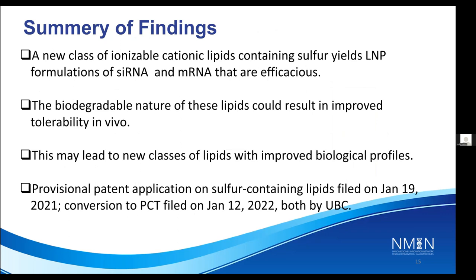In summary, a new class of ionizable cationic lipids containing sulfur yields LNP formulations of siRNA and mRNA that are efficacious. The biodegradable nature of these lipids could result in improved tolerability in vivo, and this may lead to new classes of lipids — especially sulfur lipids — with improved biological profiles. A provisional patent application on sulfur-containing lipids was filed in January 2021, and conversion to PCT was filed in January 2022.